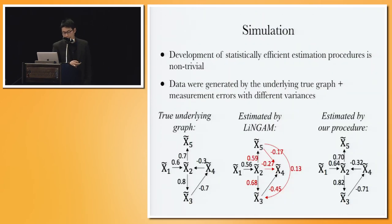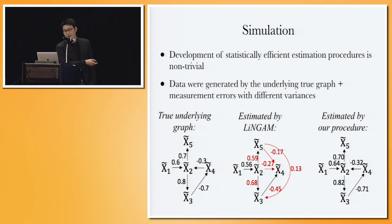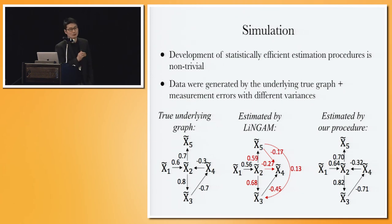Here is a brief simulation result. We have the true underlying graph G-tilde on the left, with data containing measurement error of different variances across variables. The result from standard LiNGAM analysis shows many extra edges and some edges with reversed direction. The result from our procedure successfully recovers the true causal model with parameters very close to the original ones.